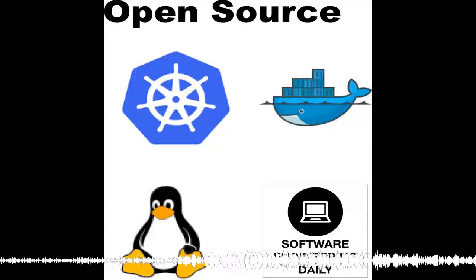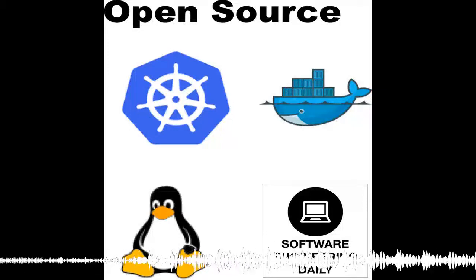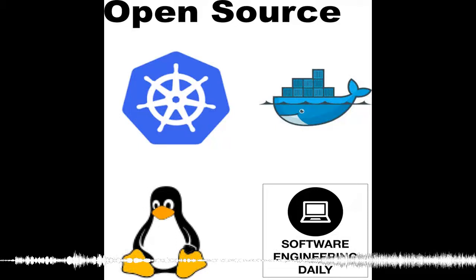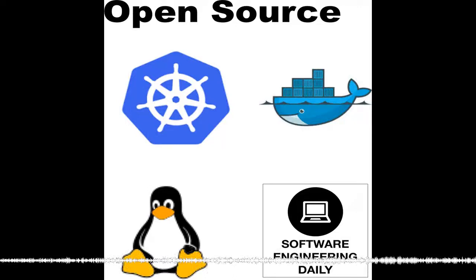Git is the most popular version control system. If you've been programming for less than a decade, it's likely you haven't used any other method of version control. The Git workflow of a software team defines how that team collaborates, builds, and ships software. In today's episode, Tim Petterson joins us. He's a developer advocate at Atlassian, and he's been building software around Git for many years.